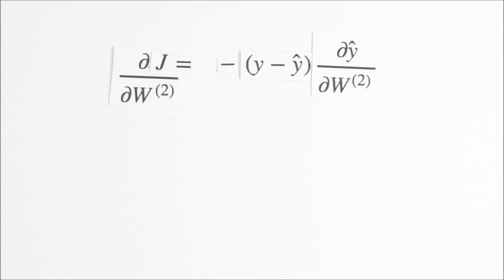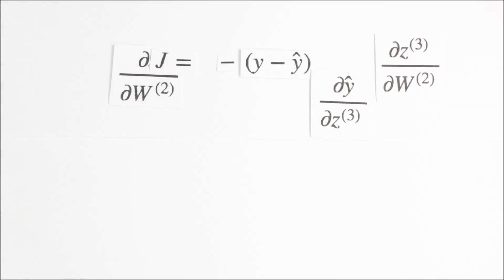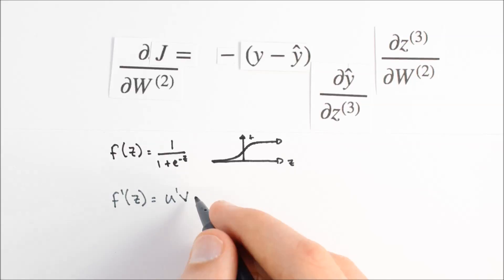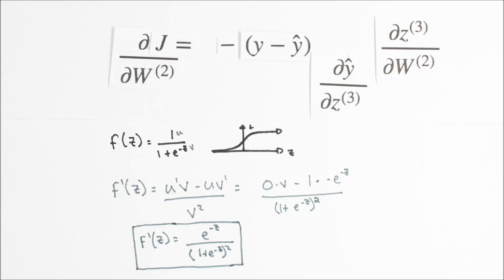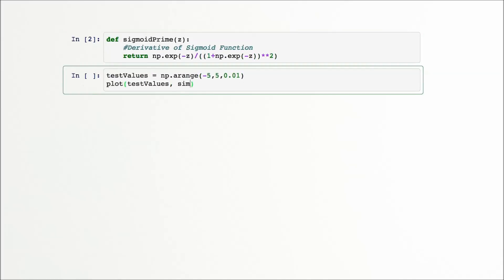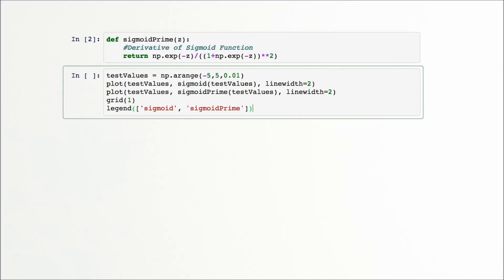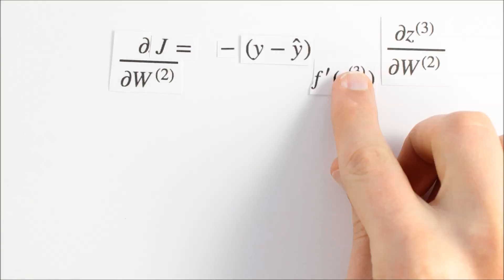We now need to think about the derivative of y hat with respect to w2. Equation 4 tells us that y hat is our activation function of z3, so it will be helpful to apply the chain rule again to break dy hat dw2 into dy hat dz3 times dz3 dw2. To find the rate of change of y hat with respect to z3, we need to differentiate our sigmoid activation function with respect to z. Now is a good time to add a new Python method for our derivative of our sigmoid function, sigmoid prime. Our derivative should be largest where our sigmoid function is the steepest, at the value z equals 0. We can now replace dy hat dz3 with f prime of z3.